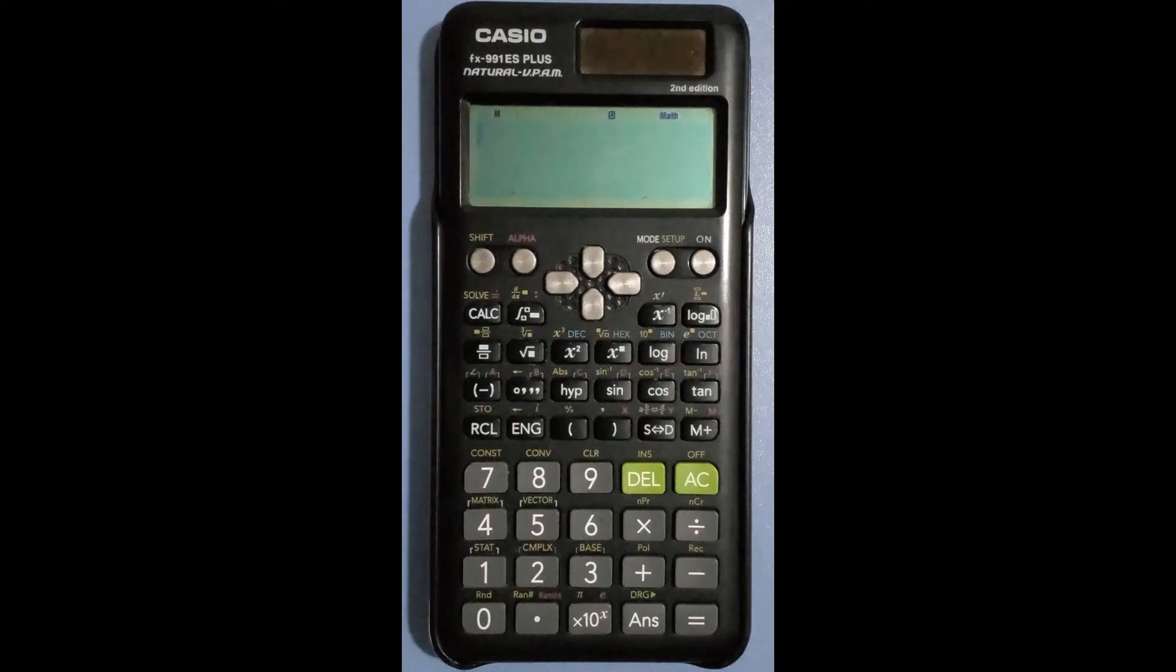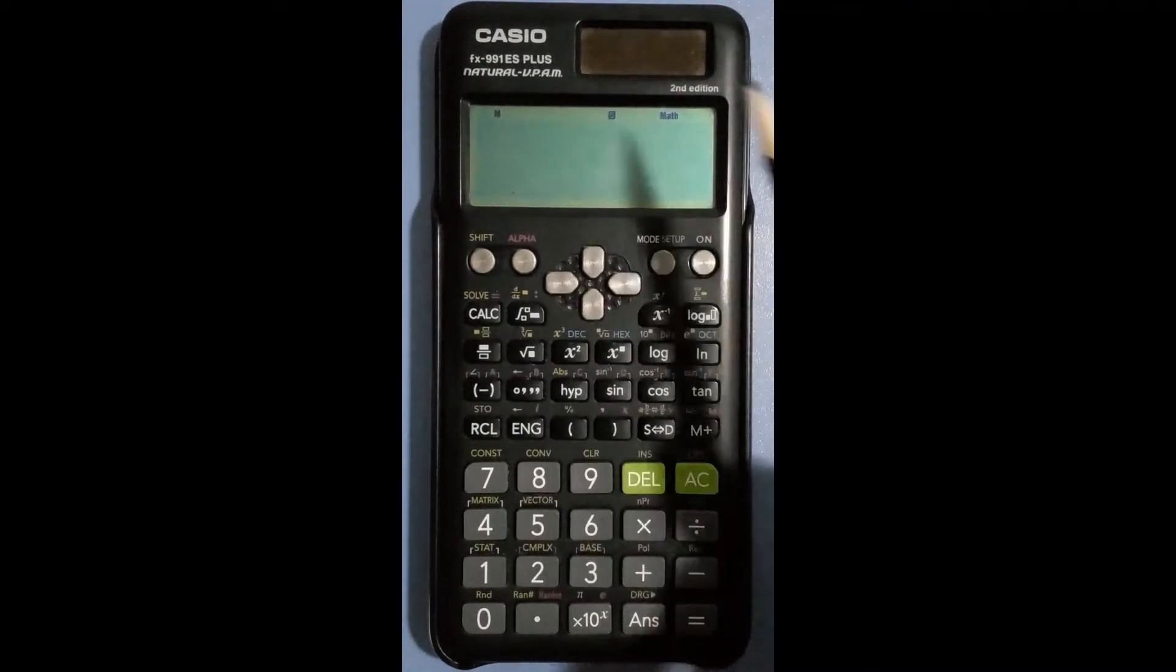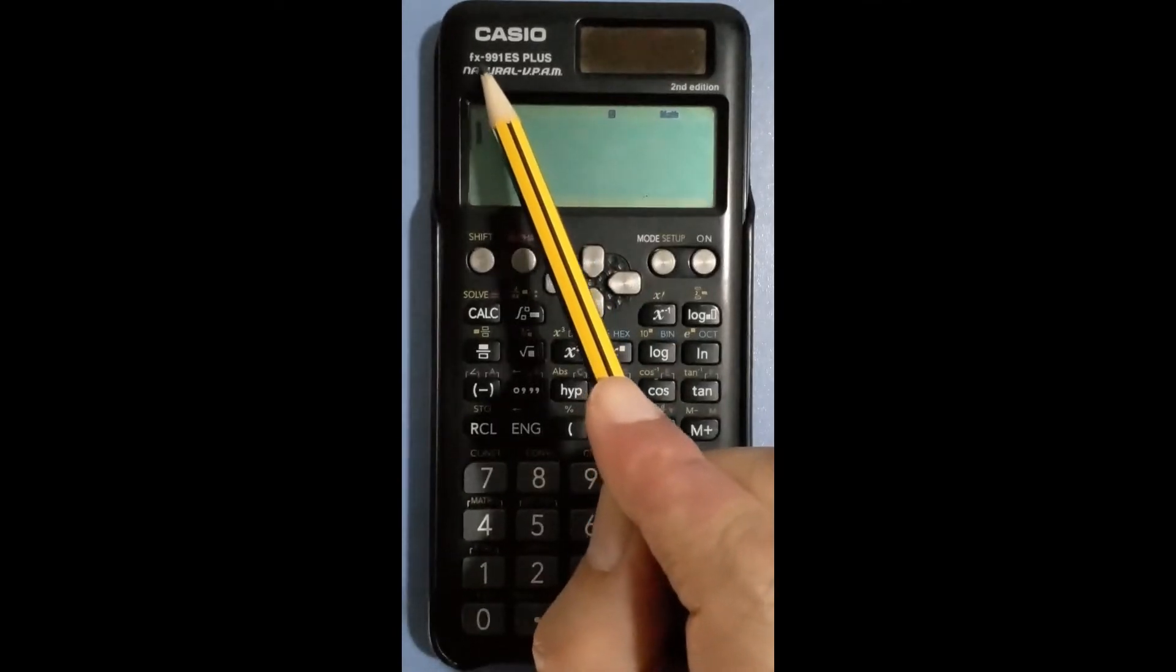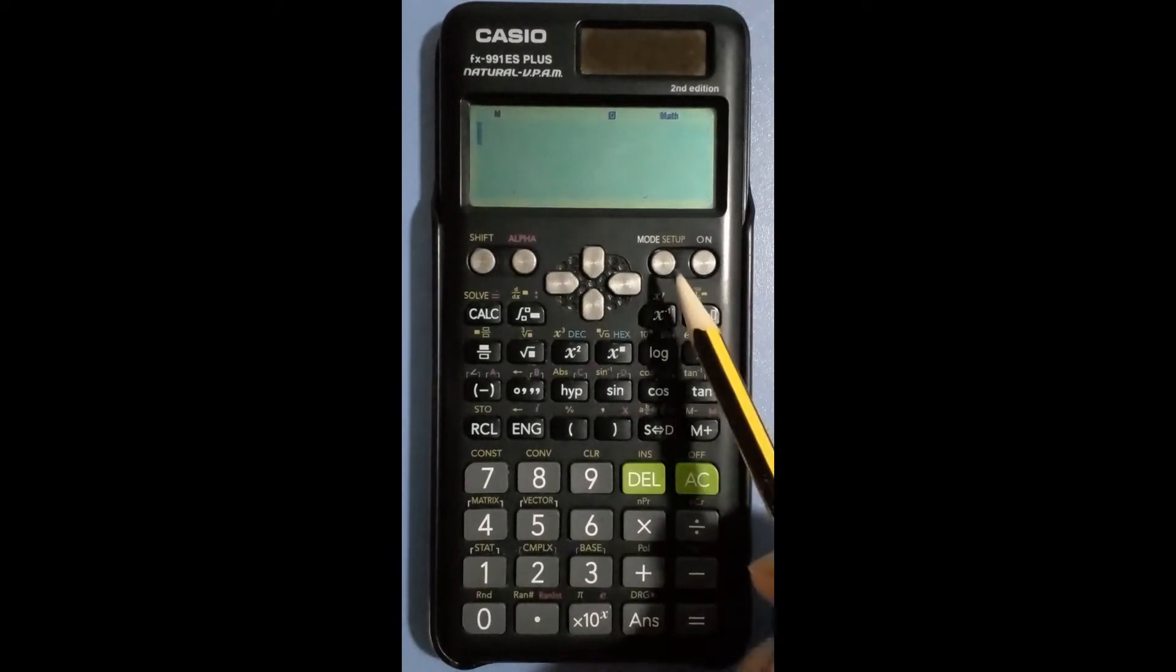Another way to find the coefficients of the linear equation is to use a scientific calculator. I will demonstrate this method using a Casio FX 991 ES plus calculator. We need to work in the statistics mode to switch to this mode.